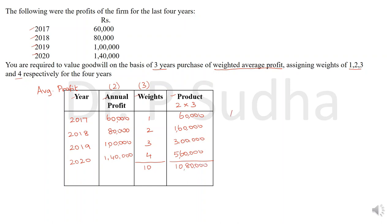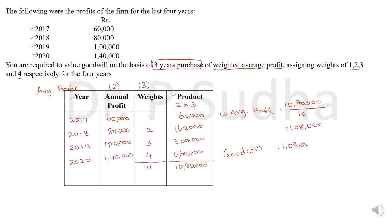Weighted average profit equals total of product divided by total of weight: 10,80,000 ÷ 10 = 1,08,000. After calculating the weighted average, goodwill equals weighted average multiplied by number of years of purchase. The question specifies 3 years of purchase, so goodwill = 1,08,000 × 3 = 3,24,000. This is the value of goodwill under the weighted average method.